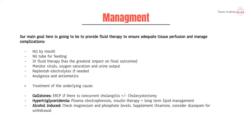We can also have specific treatments for underlying causes. If they have gallstones, we might do an ERCP to retrieve them — this is indicated if they have concurrent cholangitis, meaning there is a blockage with bile draining into the systemic circulation. If there's also inflammation of the gallbladder, you can also proceed with a cholecystectomy at the same time. Hypertriglyceridemia is also a big cause — a triglyceride level over 10 is very worrisome for acute pancreatitis, which is why we use fenofibrate if it crosses that level. If suspected as the cause, you can also perform plasma electrophoresis and insulin therapy to help lower it transiently.